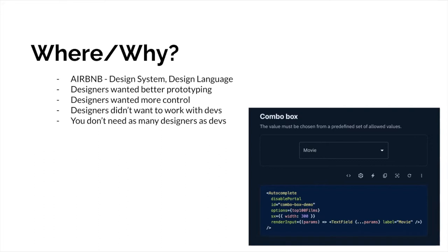When you go for an interview with these kinds of companies, they ask you to solve binary trees or explain bubble sort — things like that. The engineers that can pass those are fantastic, but they're not the kind of people that are going to write CSS and make a pretty product. That's why companies implement design libraries and design frameworks — they basically restrict the really smart devs from ever making UI/UX decisions, because they're generally terrible at it.